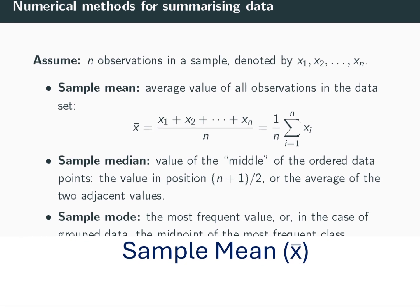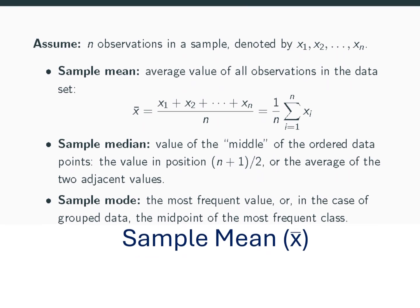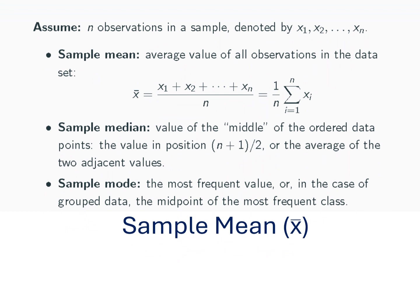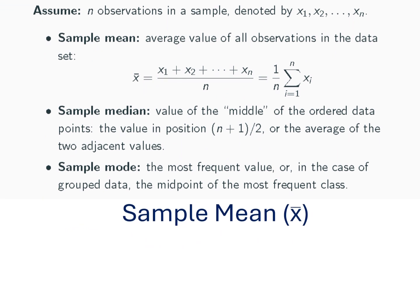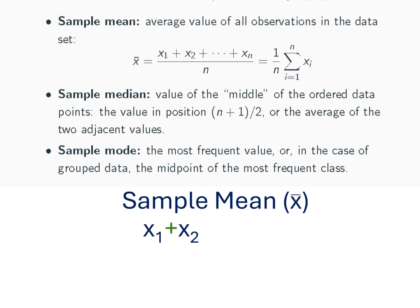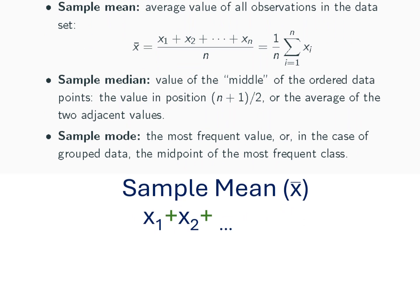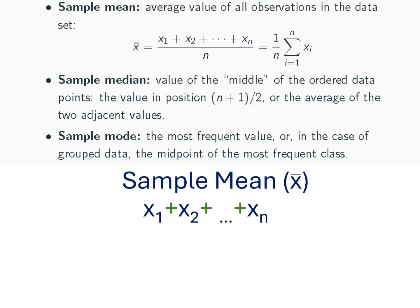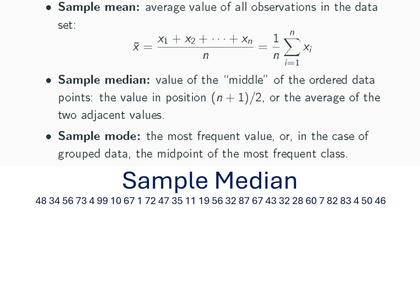Let's start with the easiest numerical summary of them all, the sample mean. It is the average value of all observations in the dataset. To get this, you need to sum all the observations from x1, x2, all the way to xn, and divide by the total number n. The notation for the sample mean is x bar.